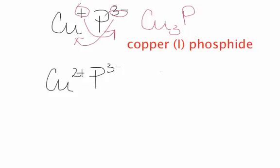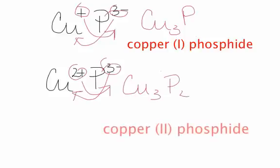Whereas copper 2+ phosphide, you take this and put it down there, take this and put it down there, so it would be Cu3P2, so this would be copper(II) phosphide.